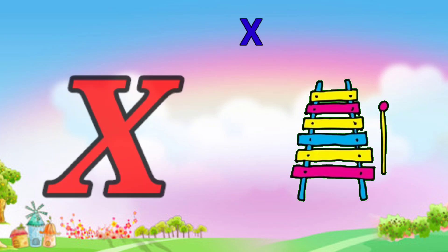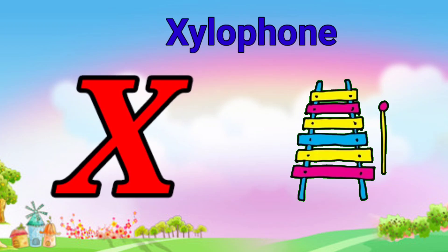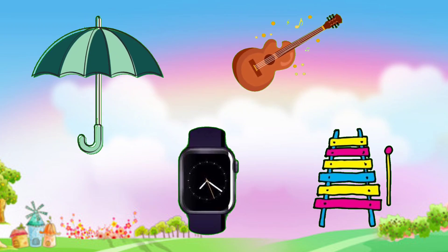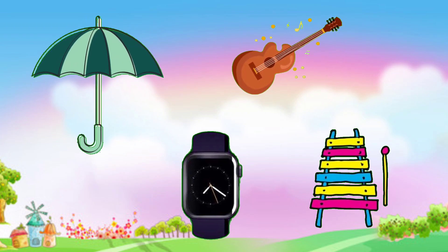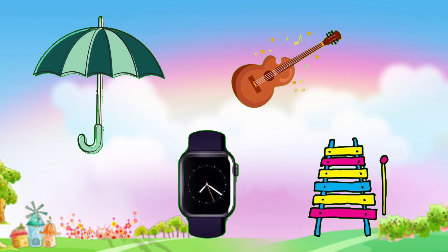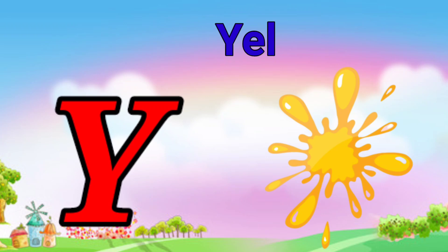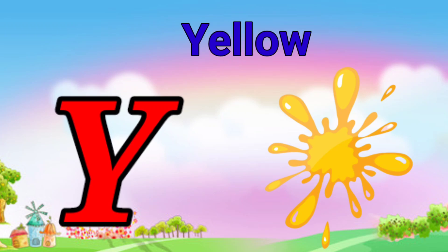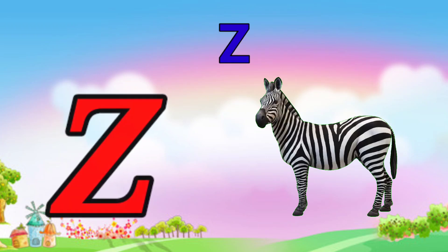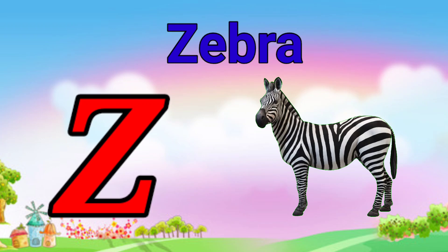X is for xylophone, z-z-xylophone. Y is for yellow, ye-ye-yellow. Z is for zebra, z-z-zebra.